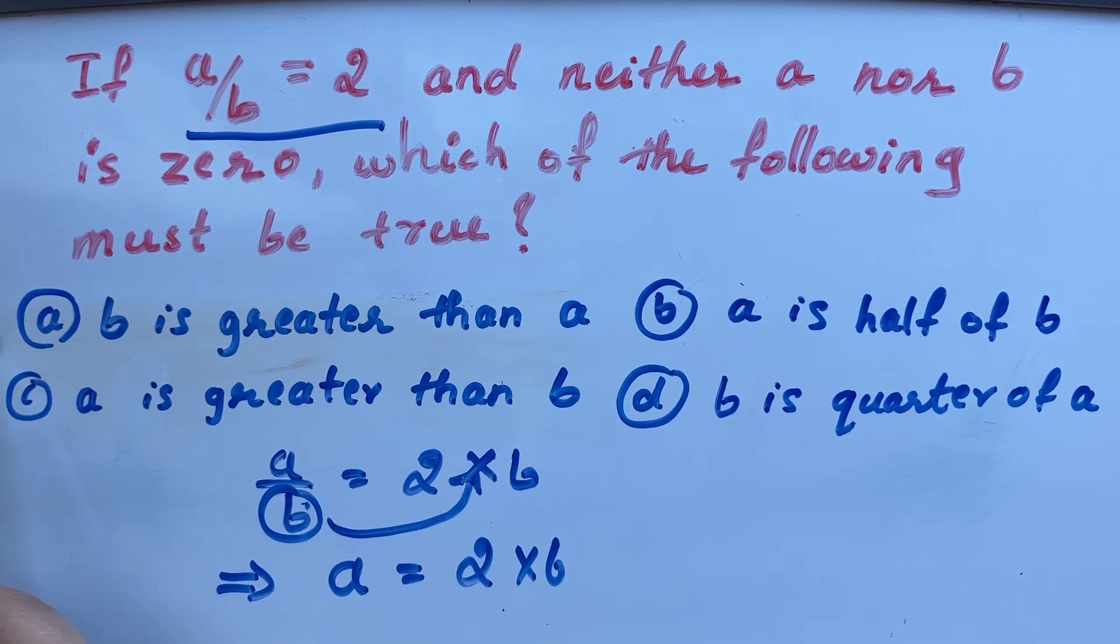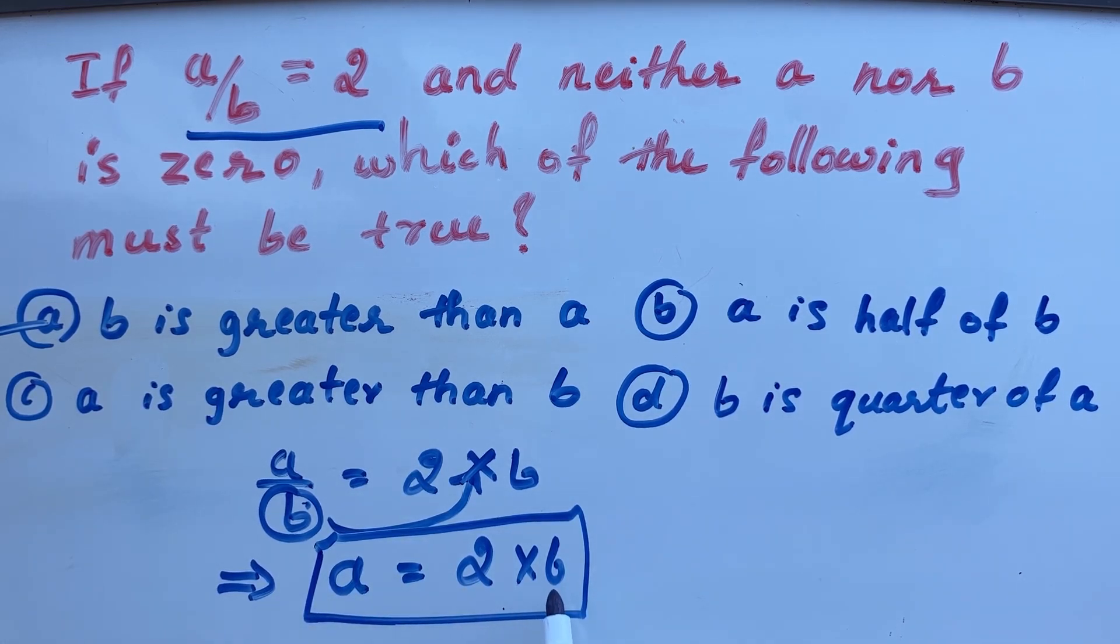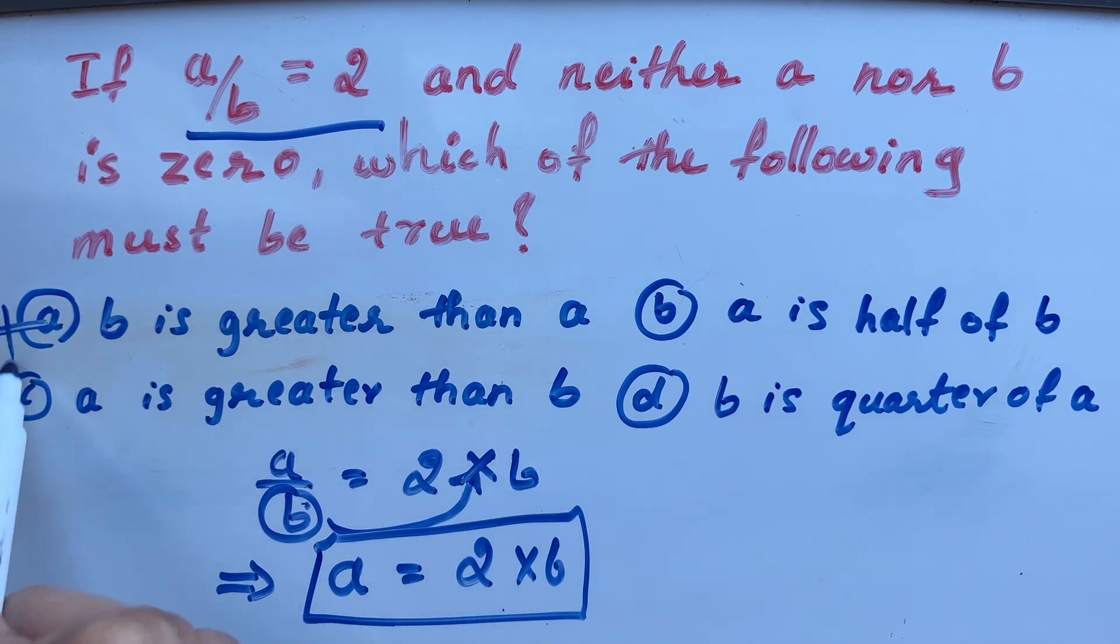Now look at the options. First option is B is greater than A. Look here. You can see here A is 2 times B. That means B can never be greater than A. So our first option is wrong.